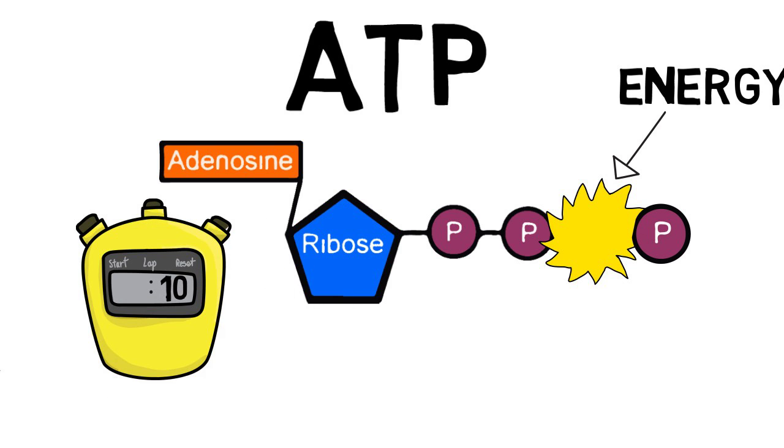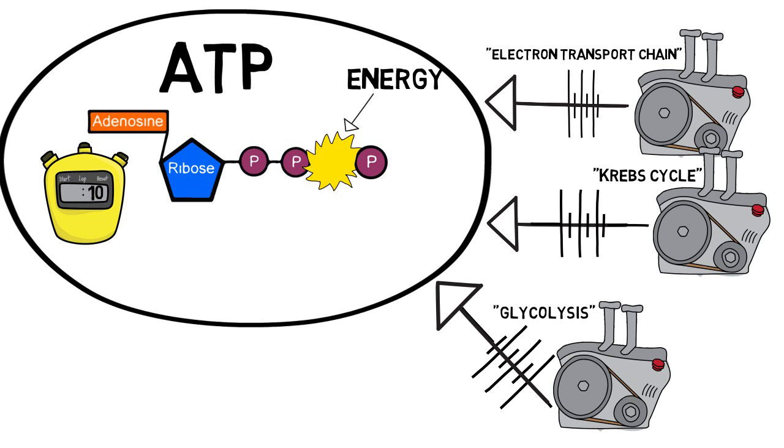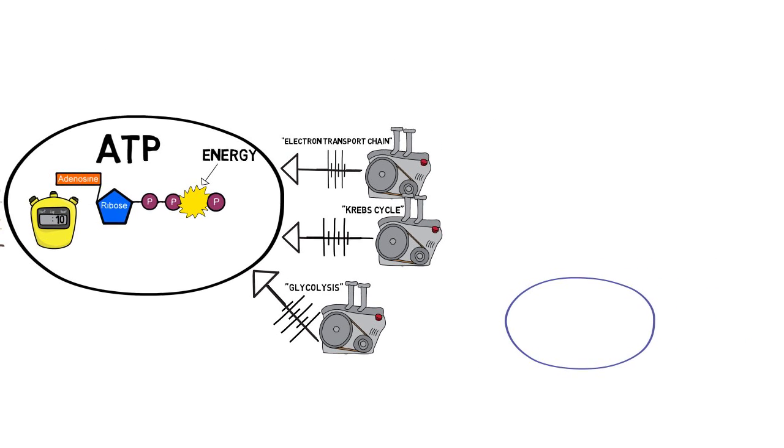Since only 10 seconds of ATP is stored, the body has three generation systems which work in real time to keep these levels topped off. Powering these generation systems and stored in your muscles is a more stable molecule, glucose.